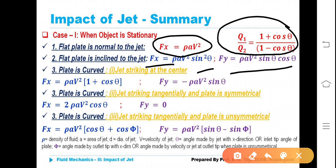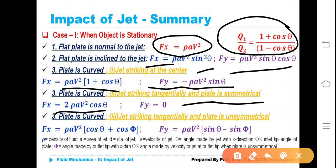When the plate is curved, let the jet strike at the center — we found out Fx is equal to rho·a·v²·(1 + cos θ), and Fy is equal to minus rho·a·v²·sin θ. When the plate is curved, symmetrical, and the jet strikes the plate tangentially, Fx is equal to 2·rho·a·v²·cos θ, whereas Fy is equal to 0.